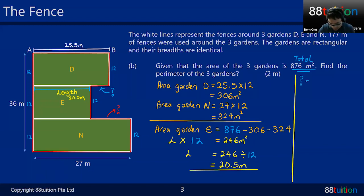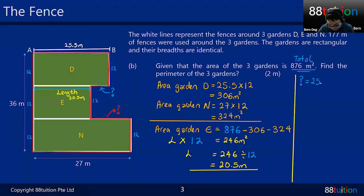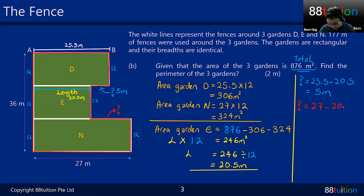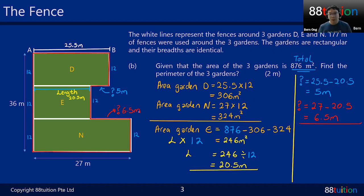The blue question mark: the full length along the bottom is 25.5, and the length of garden E is 20.5, so the blue question mark = 25.5 − 20.5 = 5 meters. The red question mark: the full width is 27, minus the length of garden E which is 20.5, so the red question mark = 27 − 20.5 = 6.5 meters.